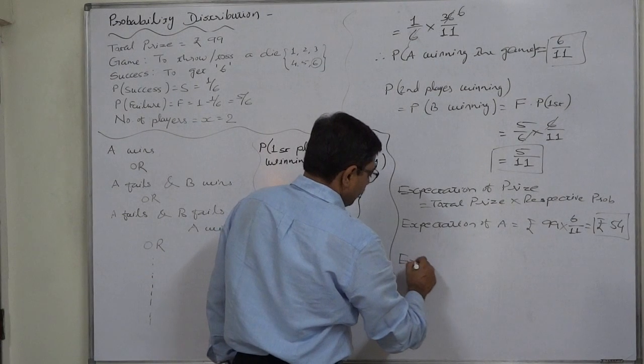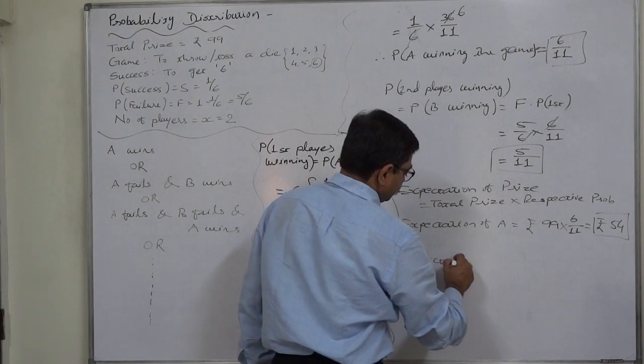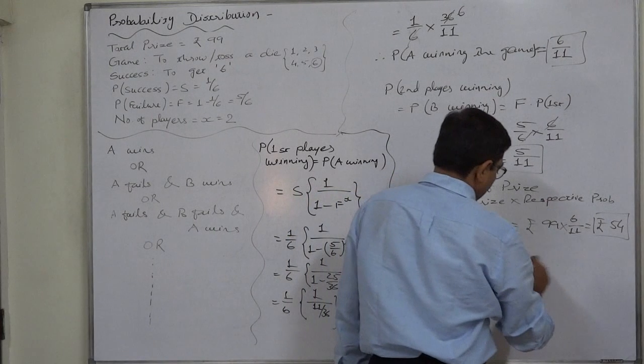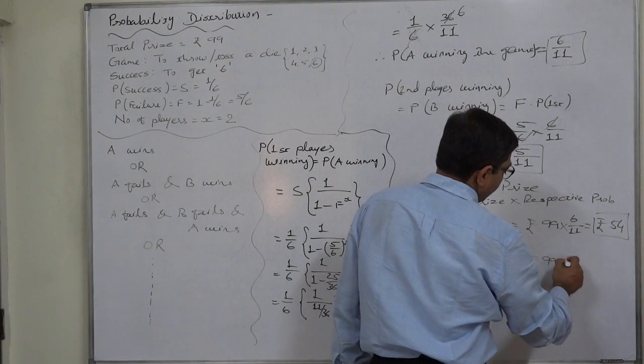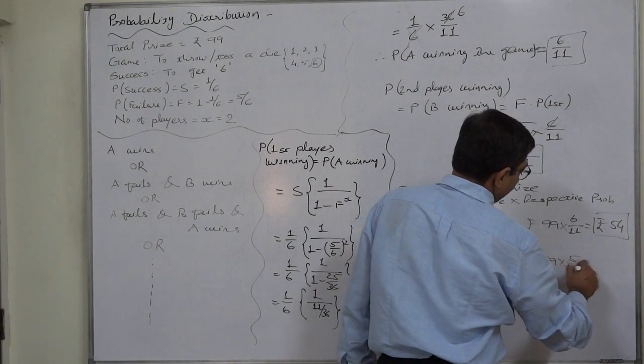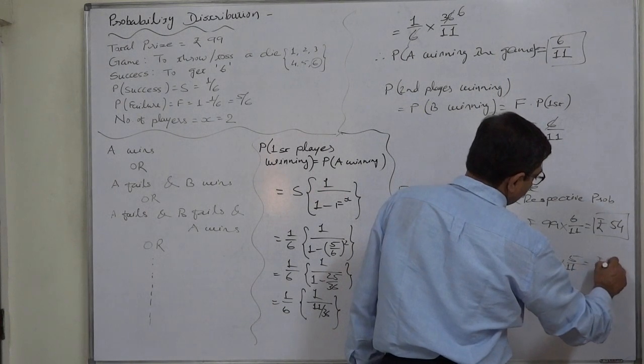And expectation of B will be Rs. 99 total price money into probability of 5 by 11. So it comes to Rs. 45.